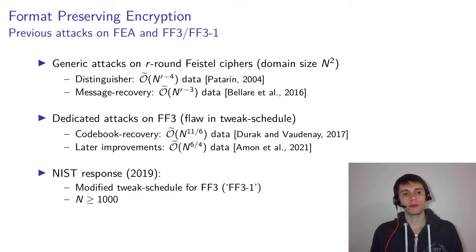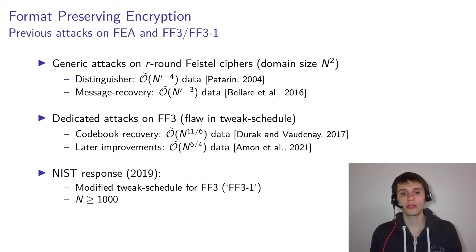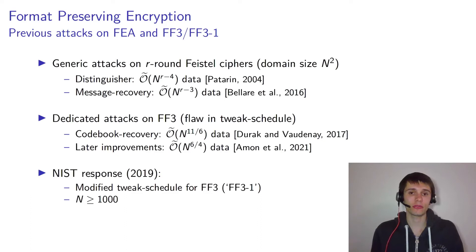For context, there have been a few attacks already on format-preserving encryption schemes. The first class are generic attacks on R-round Feistel ciphers with a small domain of size n squared. Even at the time of the design of FF3, it was already known that you can distinguish such ciphers using n to the power of r minus 4 data. This was later extended to a message recovery attack, which is a more practical threat than just a distinguisher.